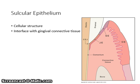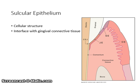Sulcular epithelium is the epithelial lining of the gingival sulcus. It extends from the crest of the gingival margin to the coronal edge of the junctional epithelium. The sulcular epithelium is a thin, non-keratinized epithelium. In health, the sulcular epithelium joins the connective tissue at a smooth interface with no epithelial ridges.